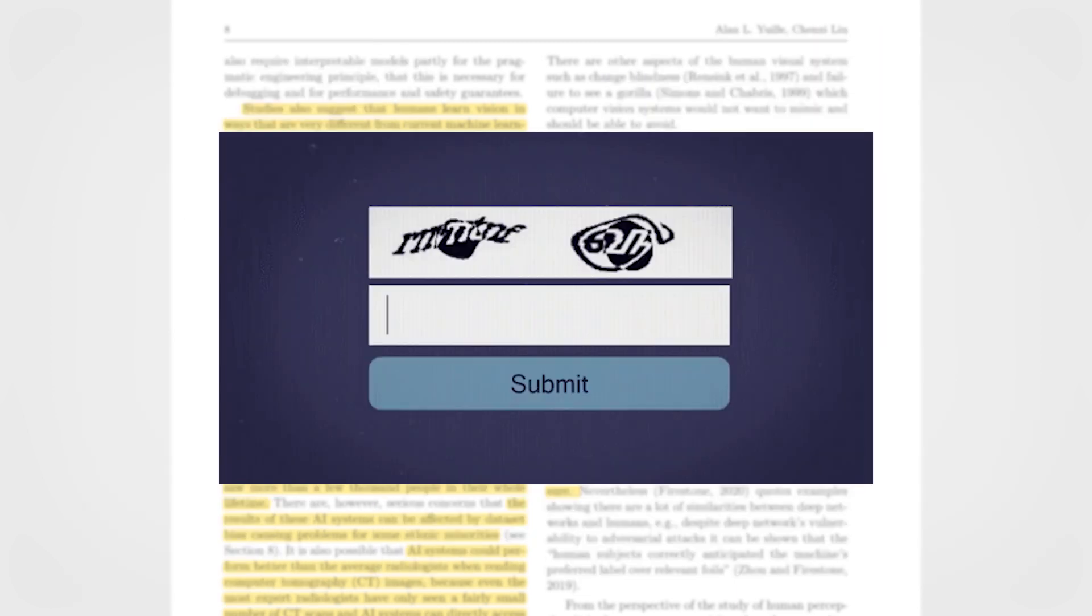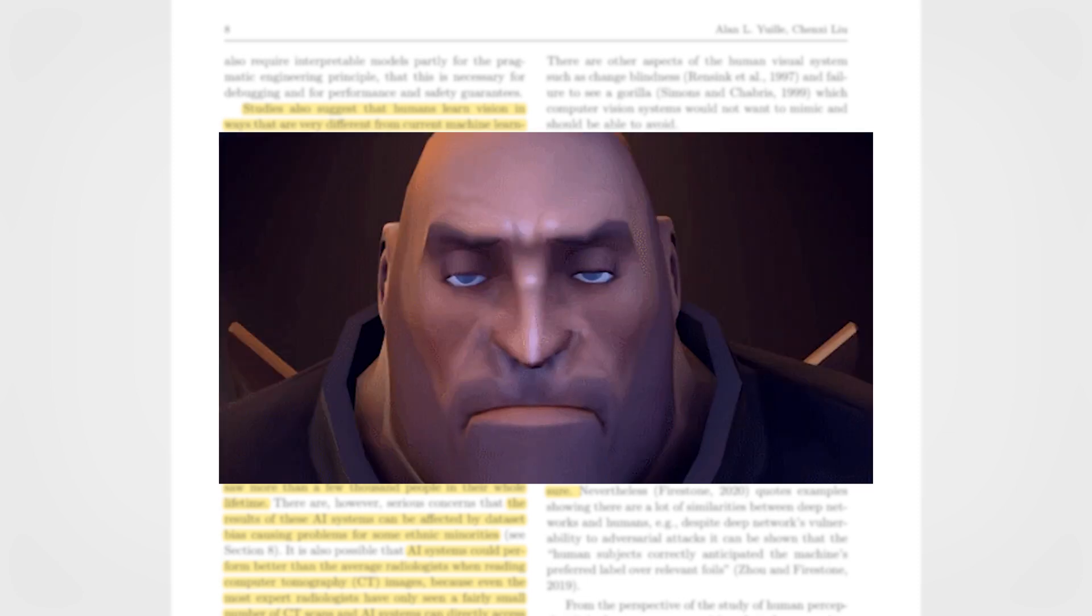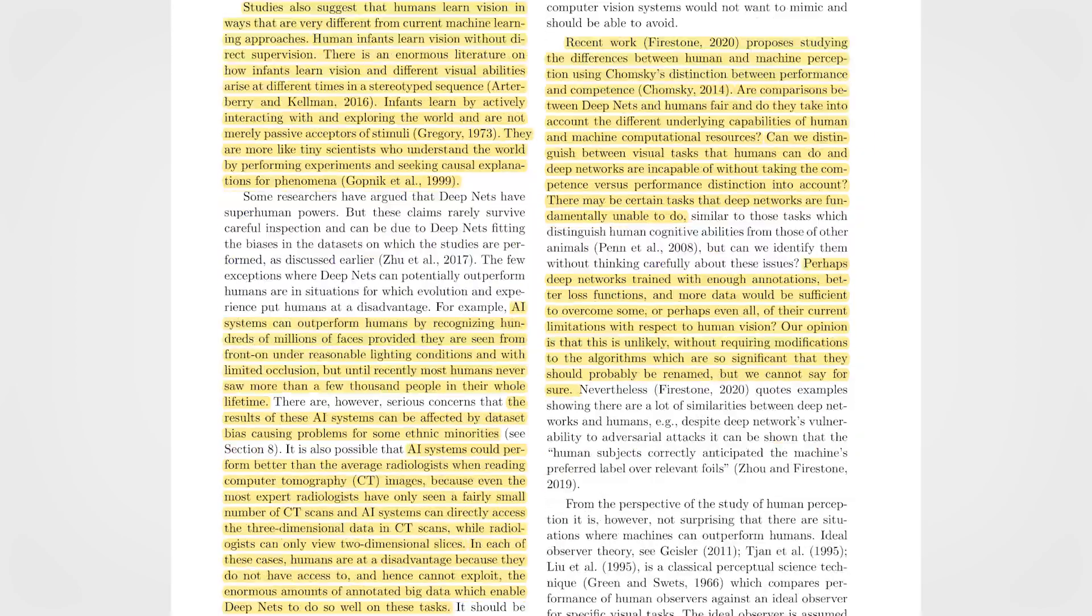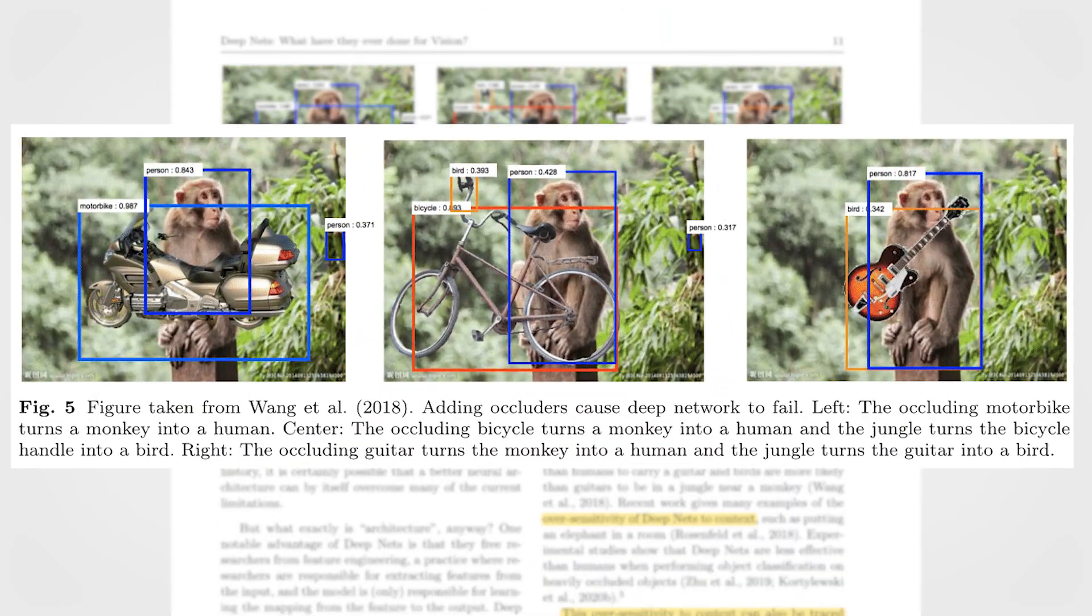As a concrete example, you can just visualize the annoying captcha you always have to fill in when logging into a website. This captcha is used to detect bots since they are awful when there are occlusions like this. As you can see here, the deep net got fooled by all the examples because of the jungle context and the fact that a monkey is not typically holding a guitar.